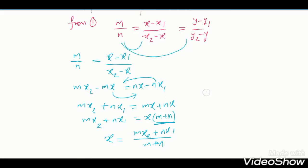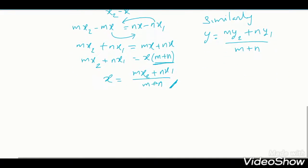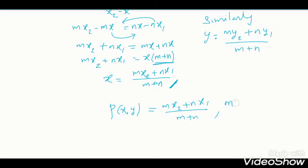Similarly, equating the other two ratios, the difference is only that x is replaced by y, x1 by y1, x2 by y2. So y = (my2 + ny1)/(m+n). Therefore the coordinates of P are ((mx2 + nx1)/(m+n), (my2 + ny1)/(m+n)). This is the point dividing line segment AB where A is (x1,y1) and B is (x2,y2) in ratio m:n. Hence proved.